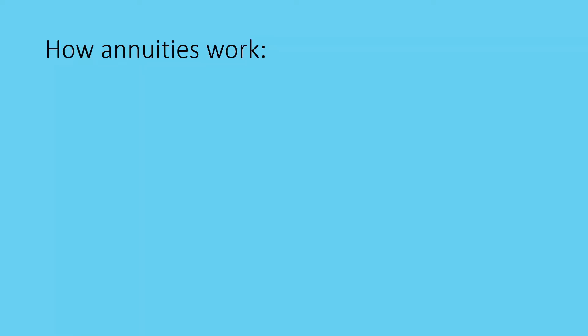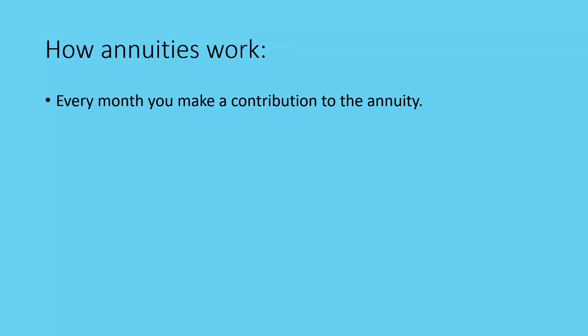Welcome back. Now we're going to look at how annuities work, or what an annuity is. The first thing is, how do annuities work? Every month you will make a contribution to an annuity. An annuity is a kind of savings account that you use for long term. Most people use them for pension type of things, so you have a retirement annuity, but there are other annuities that form part of savings policies.